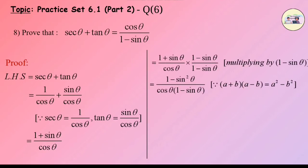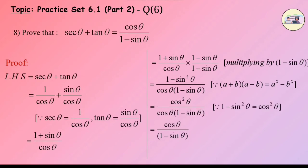Multiplying by (1 - sinθ)/(1 - sinθ) in numerator and denominator, we get (1 - sin²θ)/(cosθ × (1 - sinθ)). Since (a - b)(a + b) = a² - b², this equals cos²θ/(cosθ(1 - sinθ)), since 1 - sin²θ = cos²θ, which equals cosθ/(1 - sinθ) by cancelling one cosθ from numerator and denominator. This equals RHS.